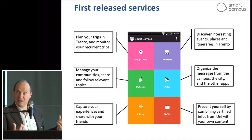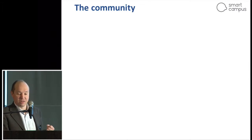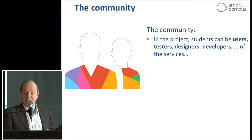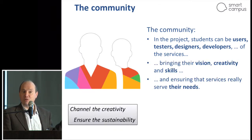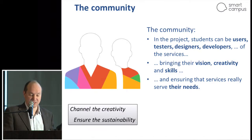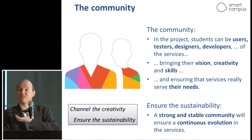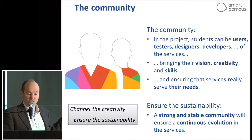With this initial setup of the experiment, we launched the community. We tried to ensure that students could participate in the project in any role they had in mind — as users, testers, designers, or developers of services. They could bring their vision, creativity, and skills, and are primarily responsible for ensuring that the services developed in Smart Campus serve their needs. Students are also important for sustainability: the project will terminate at the end of this year, and only a stable community of students can make this approach sustainable.